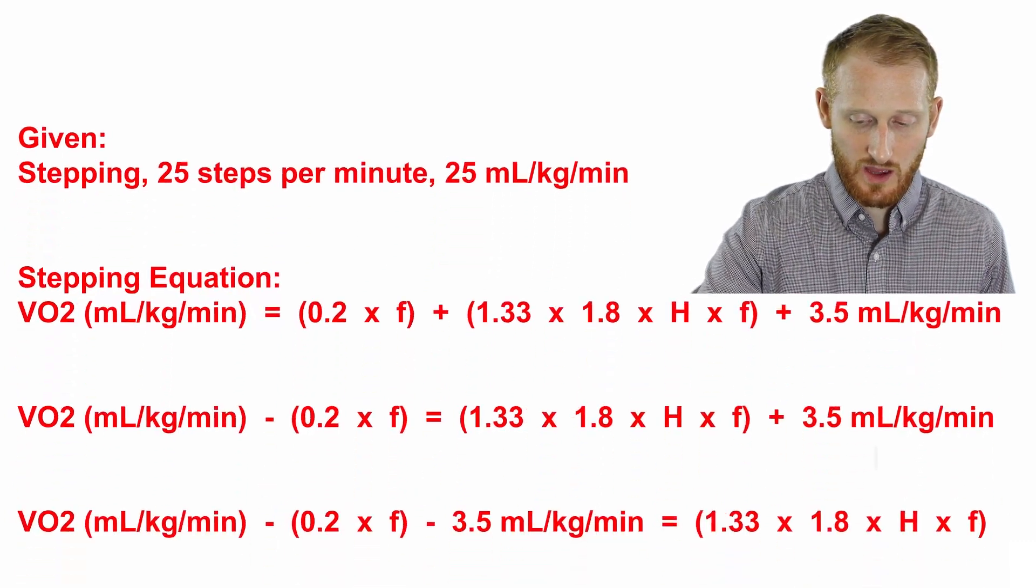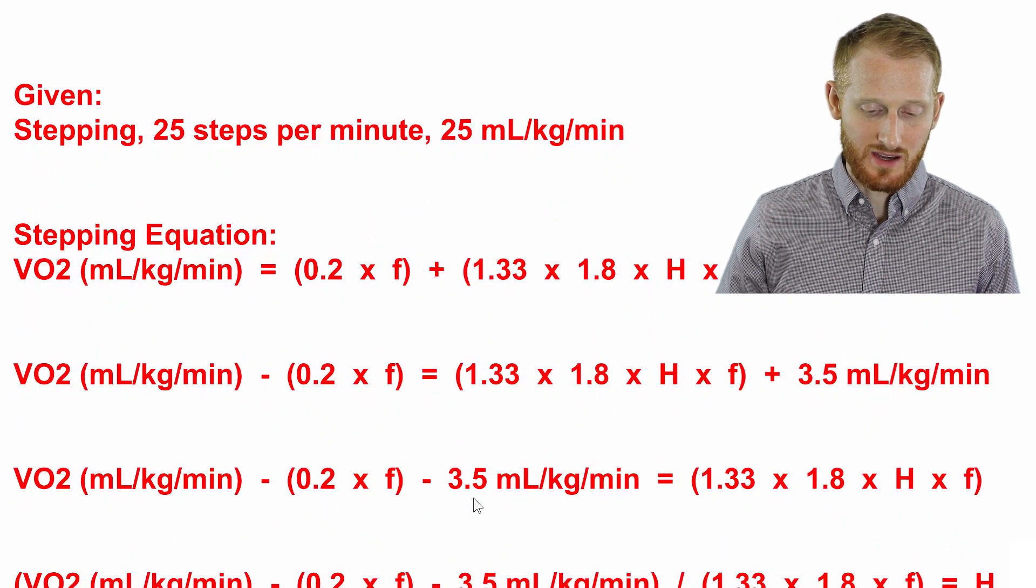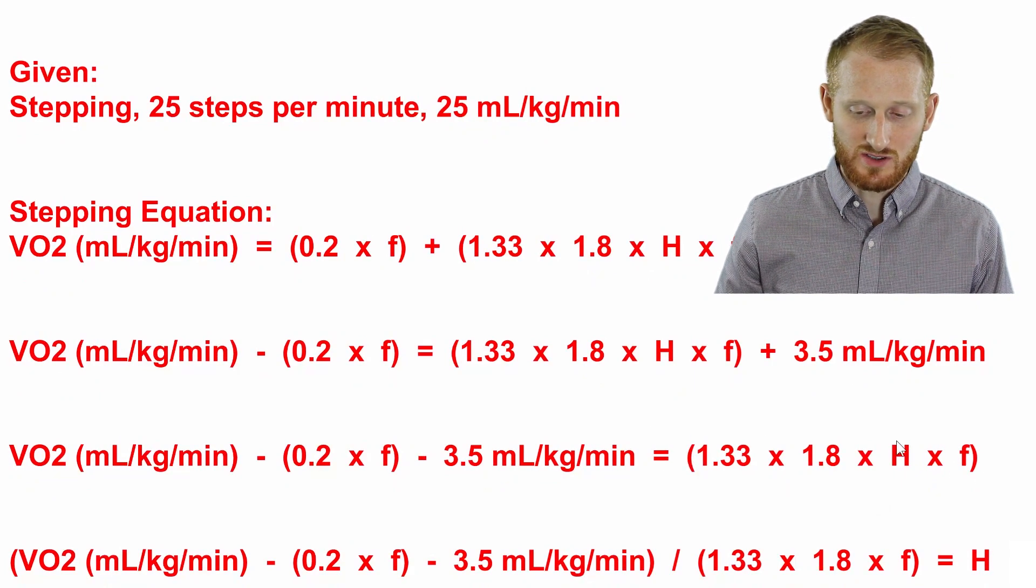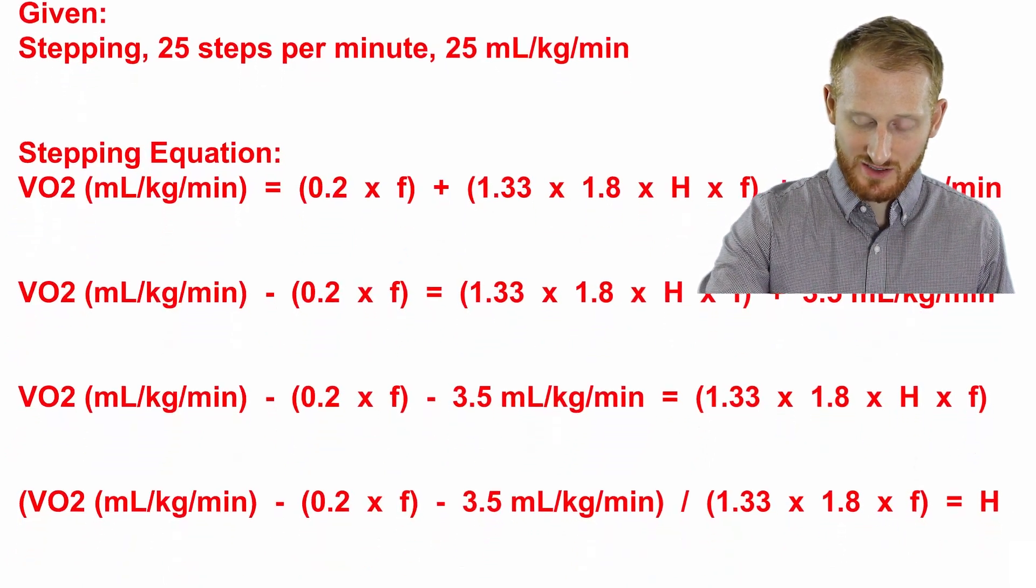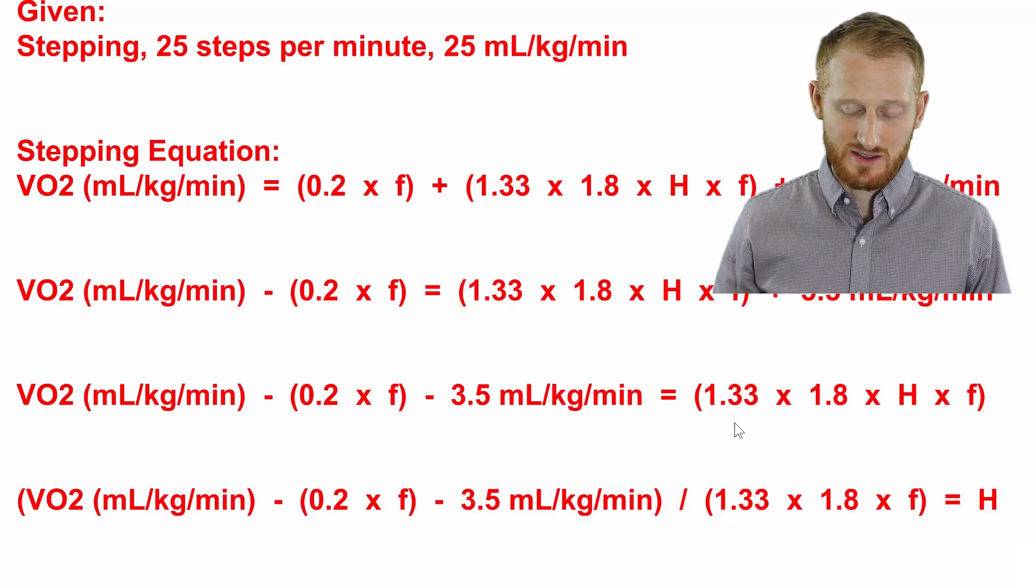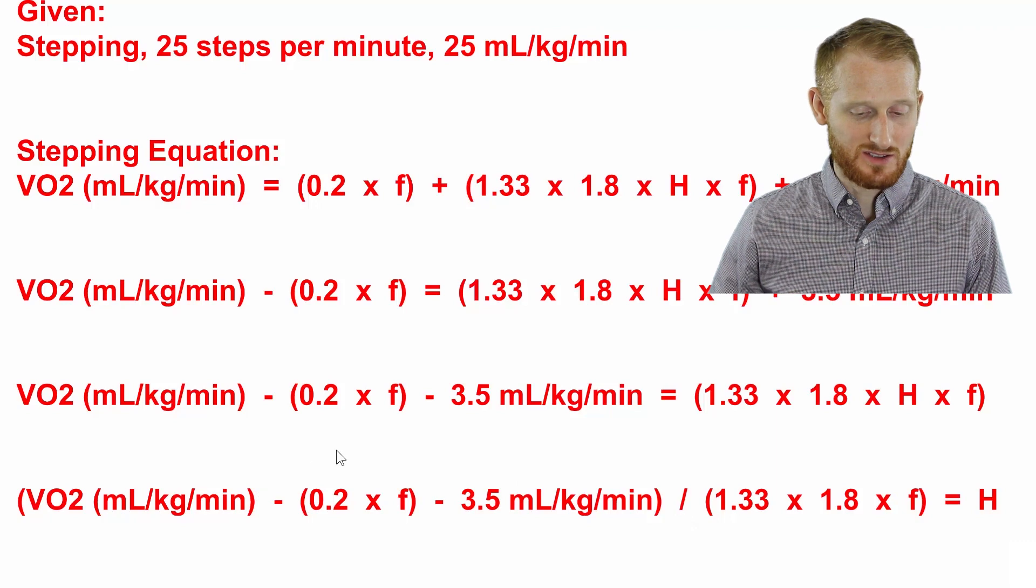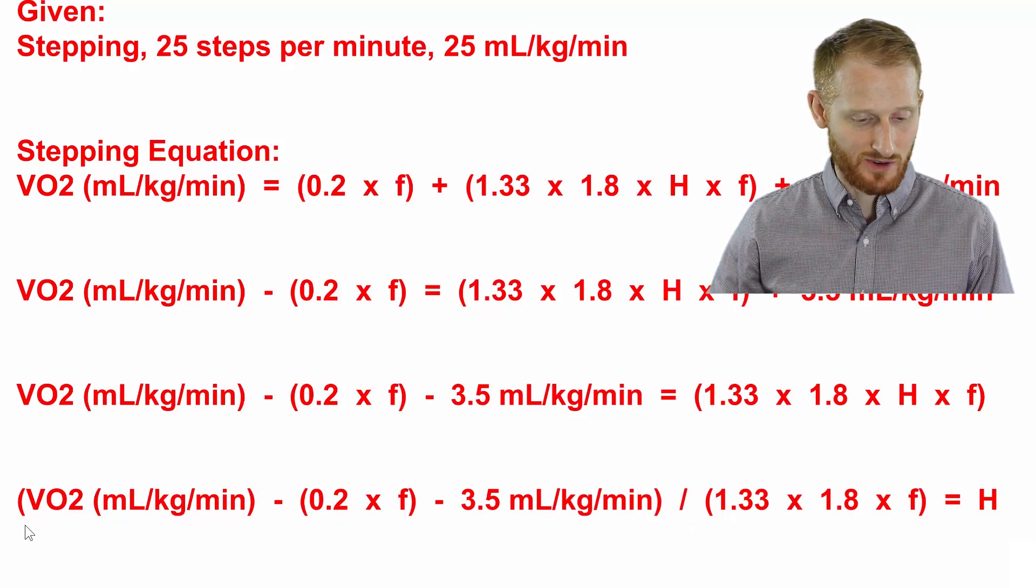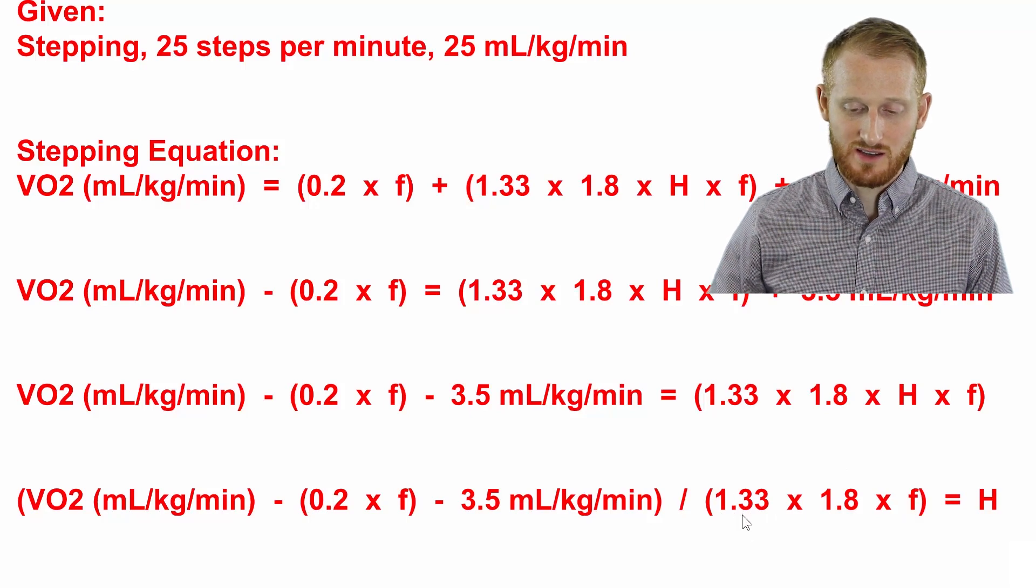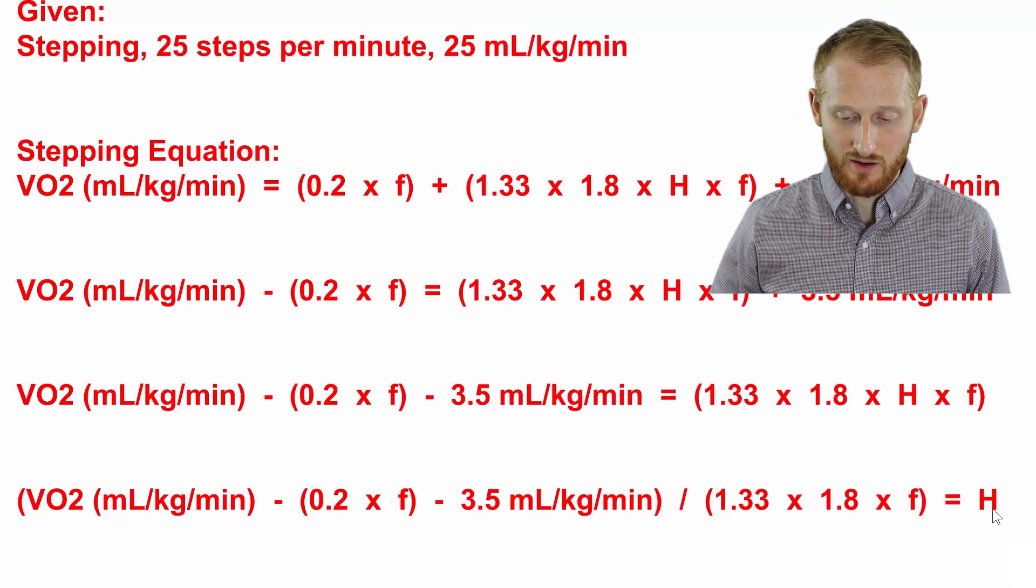The next thing we're going to do is get rid of the plus 3.5 on the right side of the equation, move it to the other side of the equation, make it negative 3.5. And now we can ignore these parentheses on the right side of the equation because there's nothing else over there. So let's start to move everything in the parentheses that's not the H, so not the height, to the other side. So everything's being multiplied against height, so we can simply move it all to the other side and divide it into whatever is already over there. So let's put parentheses around the stuff that was already over there, and then divide by the new stuff, the frequency of the stepping. And this is the final equation that we will be using.